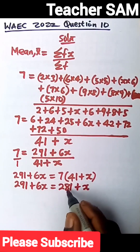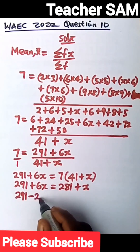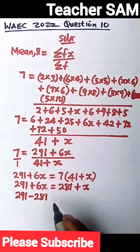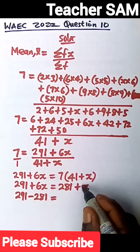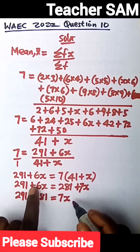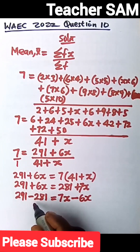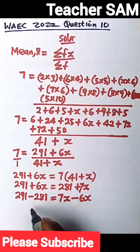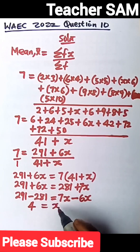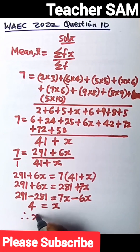Moving 287 to the left side: 291 minus 287. Remember, when a term crosses to the other side it becomes negative, so 6X crossing over becomes minus 6X. We get: 291 minus 287 equals 7X minus 6X. That gives us 4 equals X, so X equals 4. That is the answer required for part A.